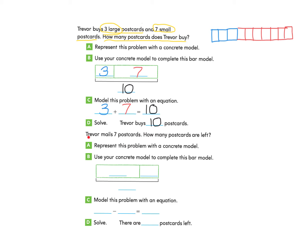Let's look at the next section. Trevor mails seven postcards — how many postcards are left? Part A asks us to represent this problem with a concrete model, using the concrete model we started with. We had ten postcards total. Trevor mails seven of them, and then the rest — three — are not mailed. That's what's left.